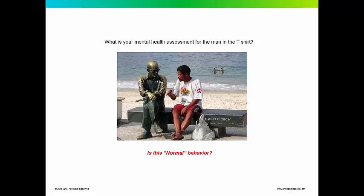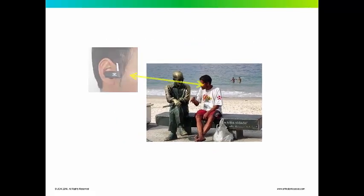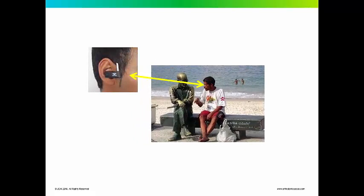If you take a look at the gentleman in the white t-shirt, how would you assess his behavior? Would you consider his behavior to be normal? He's sitting next to a bronze statue. Your assessment is based on a two-dimensional photograph. If you had the ability to walk around this gentleman and see him from behind, you would see that he's wearing a Bluetooth earpiece. And that's basically the difference between imaging with traditional cephalometric and panoramic x-rays, which are two-dimensional, versus three-dimensional imaging using Cone Beam CT.